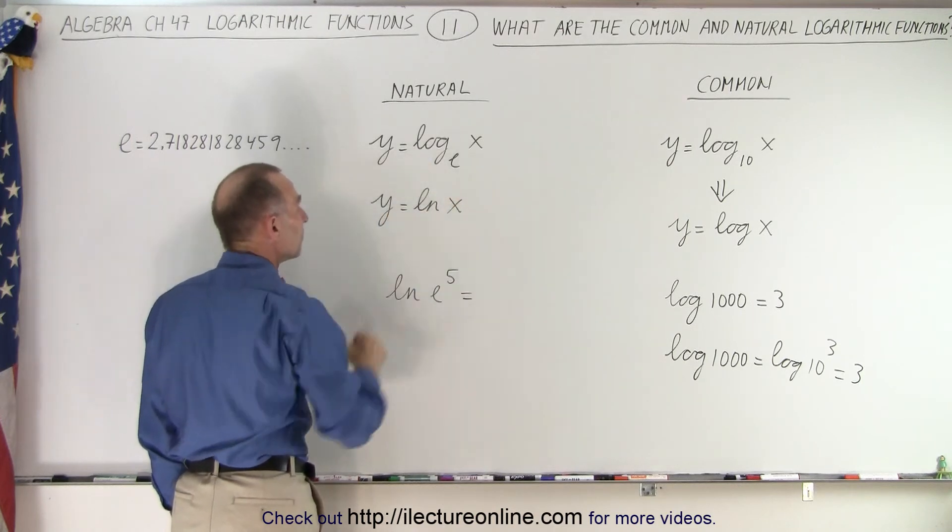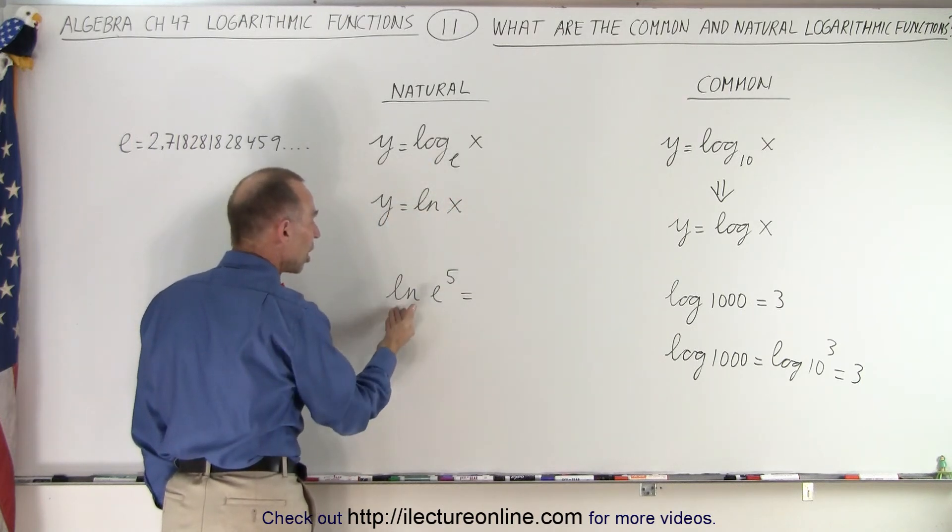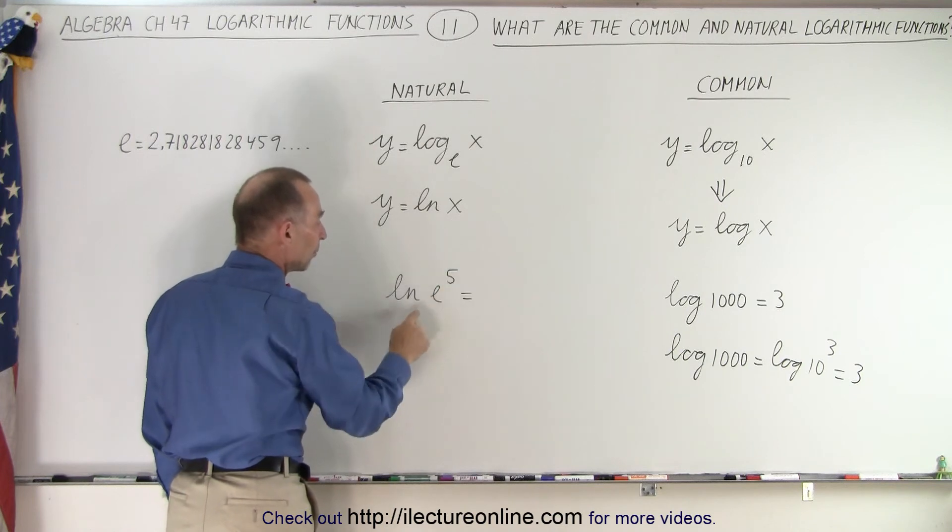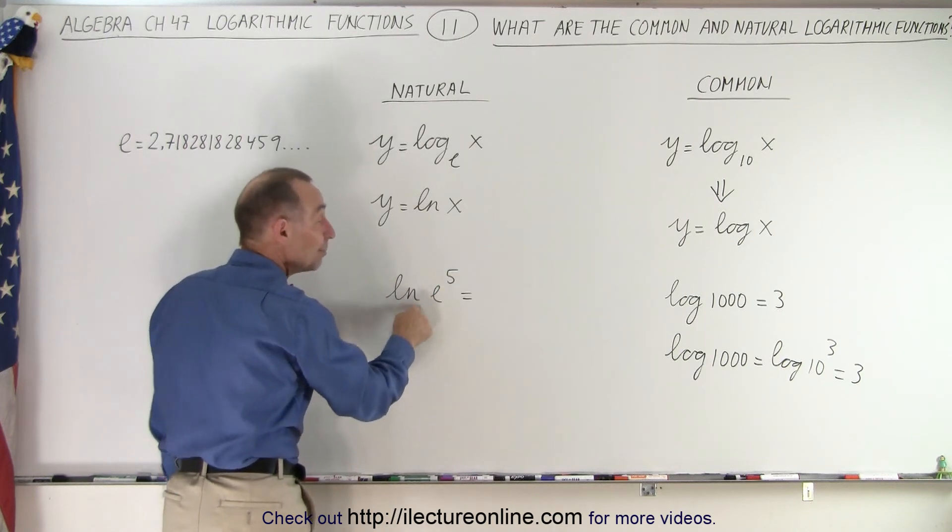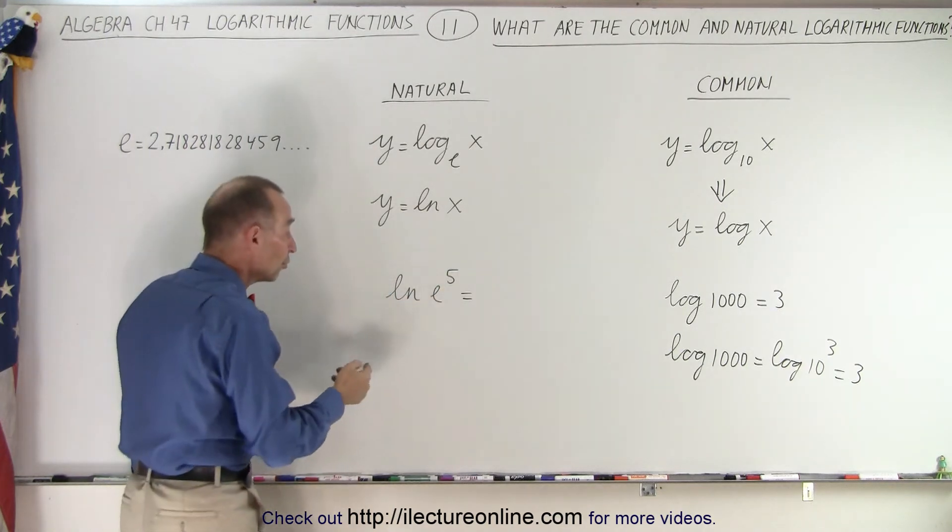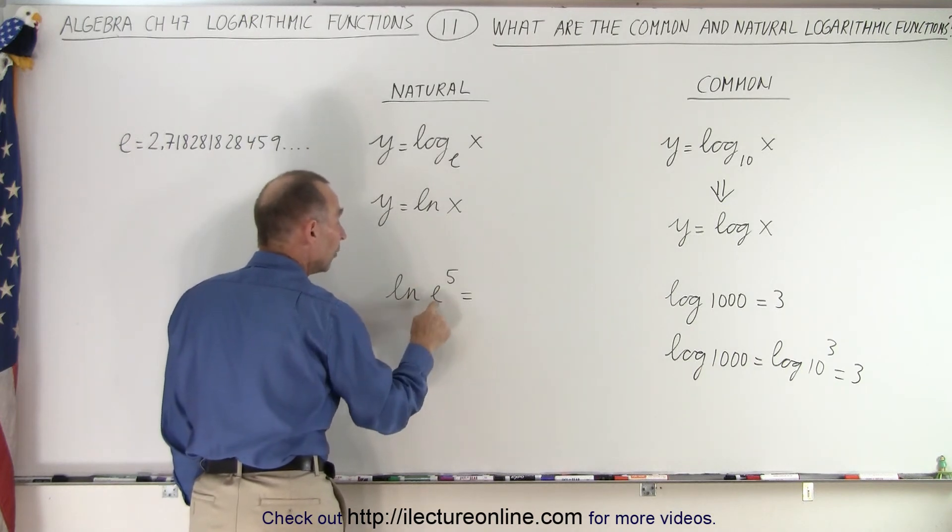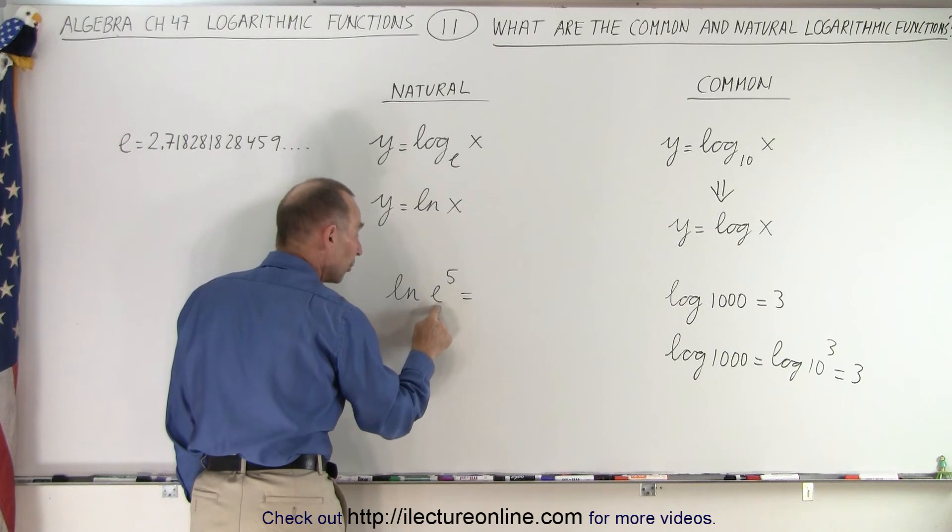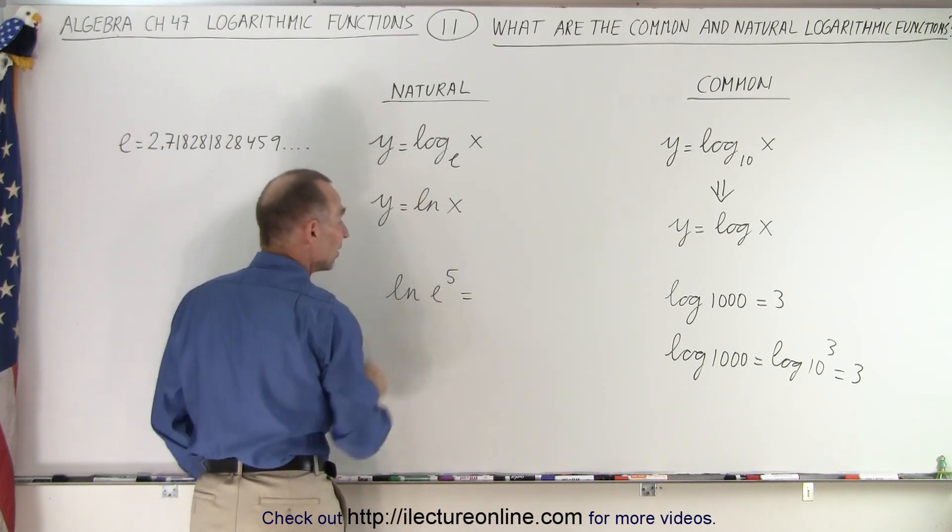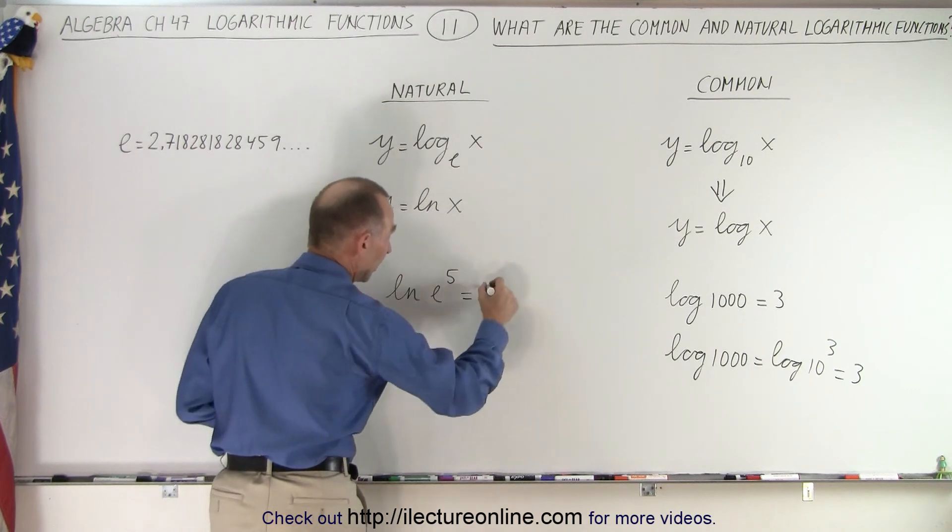So, if we take the natural log of e to the fifth power, we remember when we see this, it means base e. And of course, that's equal to the exponent when we take the natural log of the same number, the same base to the fifth power, where the base is equal to the base of the natural log. So this is simply the number five.